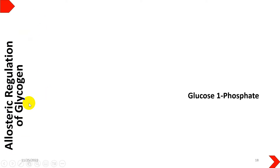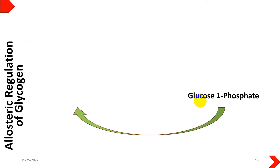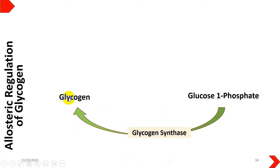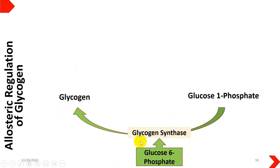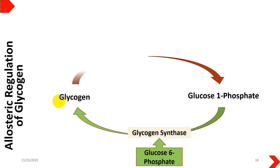When there is an increased amount of glucose-1-phosphate in the body, glycogen synthase will act on it and convert it into glycogen — which is basically the glycogenesis process. The enzyme which up-regulates this process is glucose-6-phosphate. If there is increased glucose-6-phosphate concentration, it will positively regulate glycogen synthase to convert glucose-1-phosphate into glycogen, meaning glucose-6-phosphate enhances the process of glycogenesis.